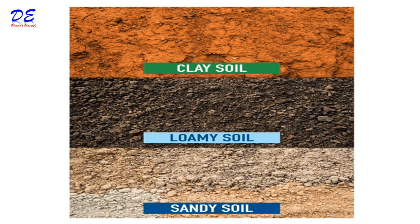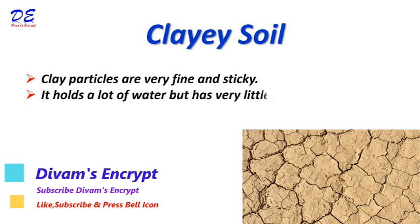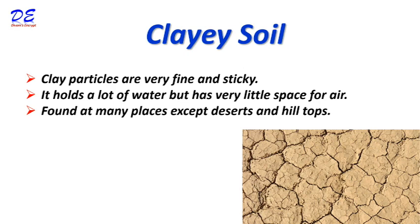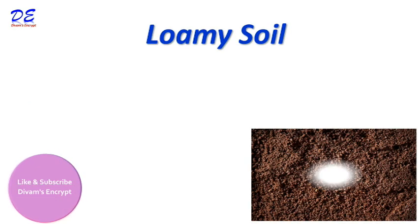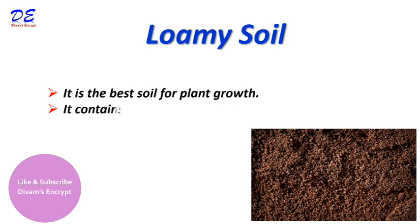There are three types of soil: clay soil, loamy soil, and sandy soil. Clay particles are very fine and sticky. It holds a lot of water but has very little space for air. Clay soil is found at many places except deserts and hilltops.